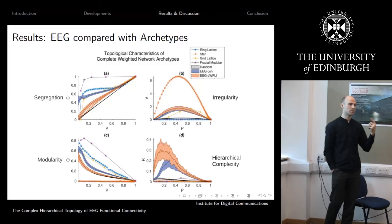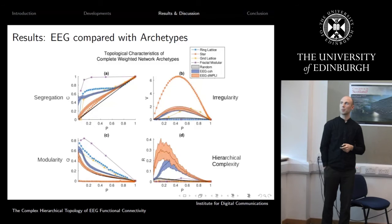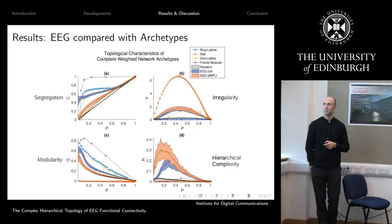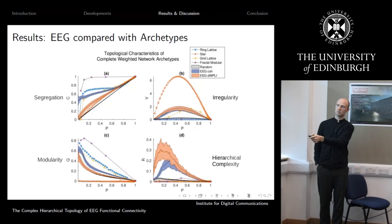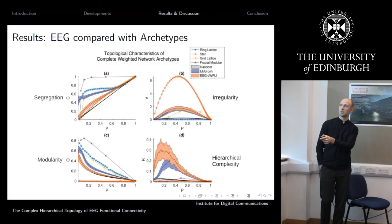Looking at hierarchical complexity specifically: the brain networks are very complex, with particularly strong hierarchical complexity. The random network, shown here with just random weights, has very low hierarchical complexity, while the EEG has very high hierarchical complexity. The phase-based connectivity measure, WPLI, shows an even more complex topology than coherence.